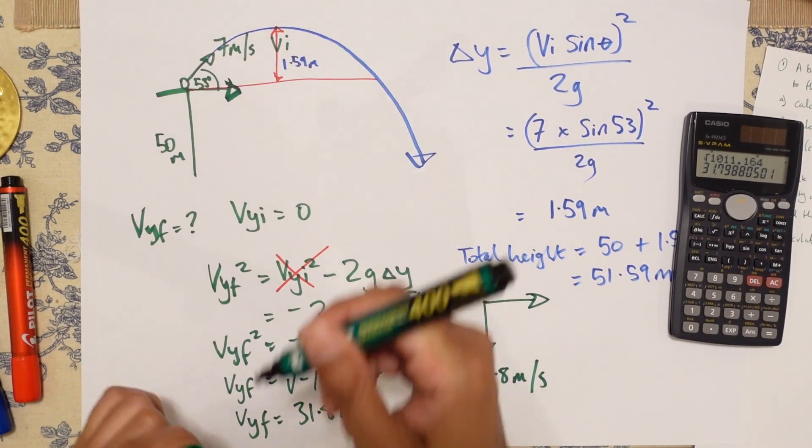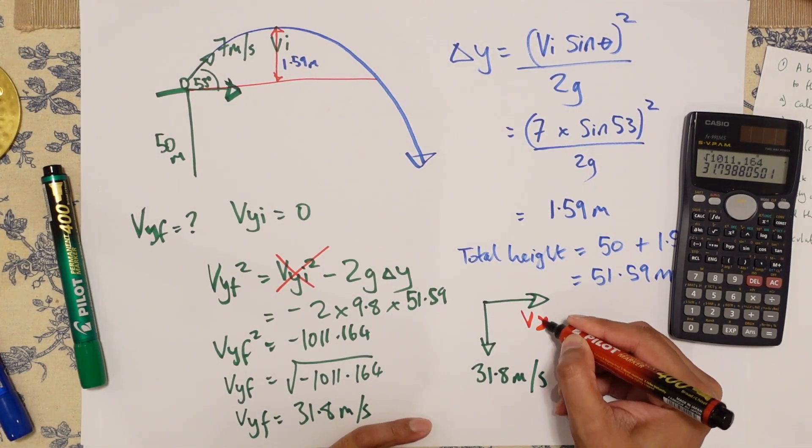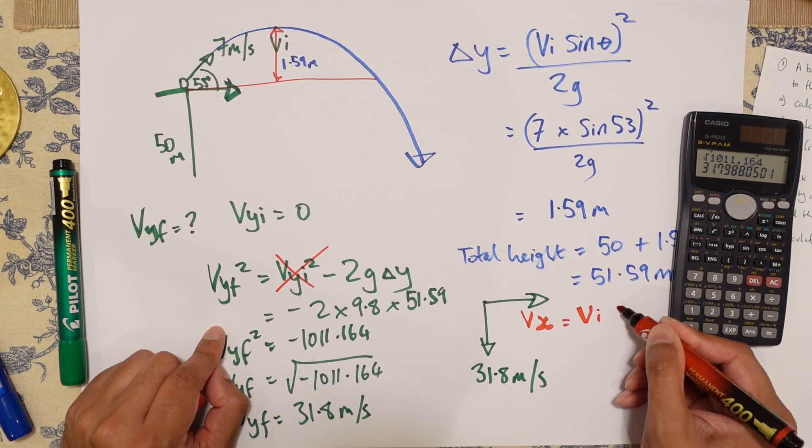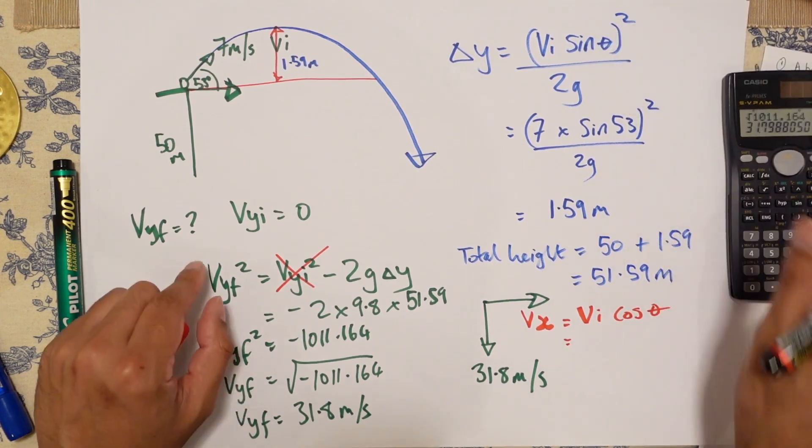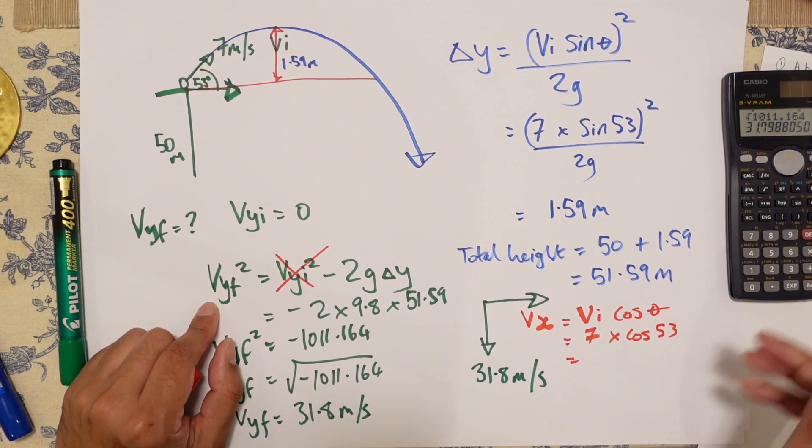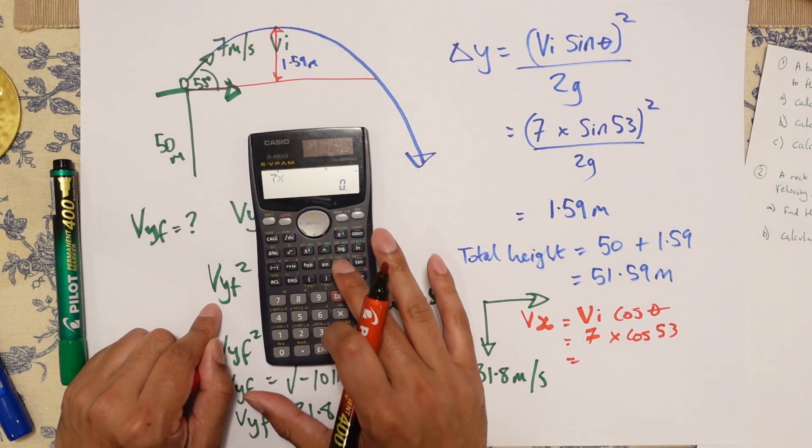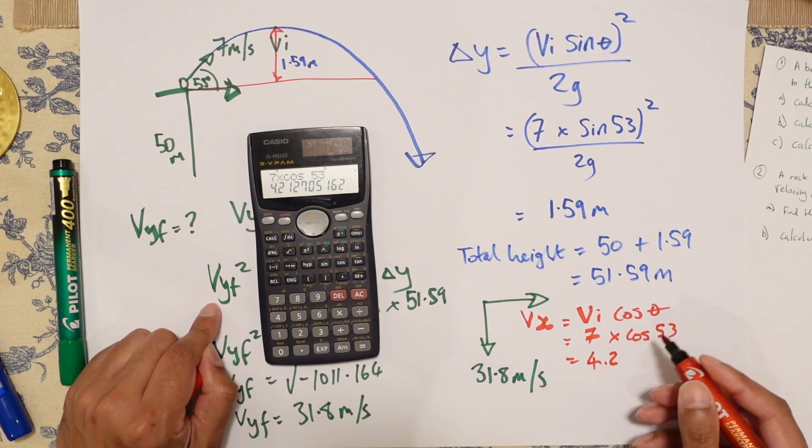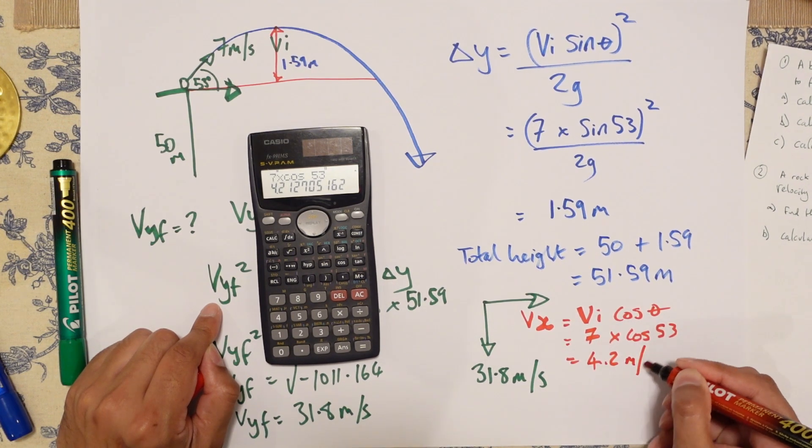Which I haven't even worked out yet. So I'm going to work out VX. Now, VX is equal to VI cosine theta. So VI again, it's 7 times cosine 53, which is 4.21 meters per second.